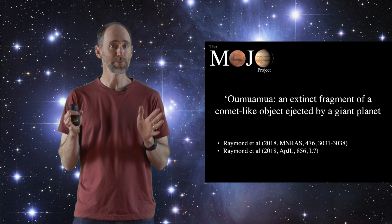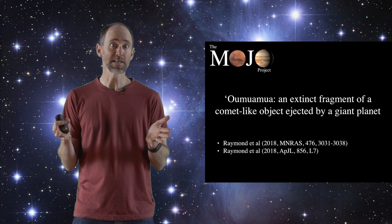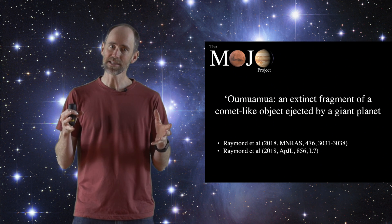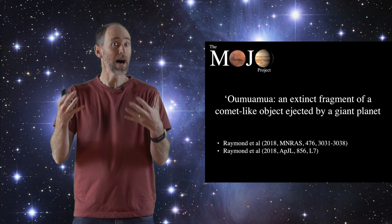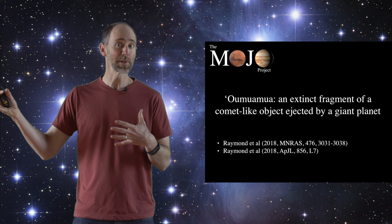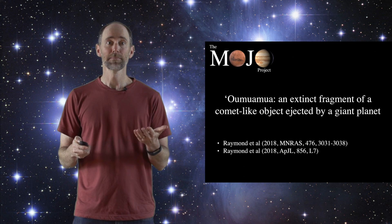Now the Mojo Project's contribution here has been to develop a model for the origin of this object. We think that it might be a fragment, a piece of a planetesimal that was a comet-like planetesimal that was kicked out of its solar system by a giant planet, and now we're seeing it passing through our own solar system. So let me explain.